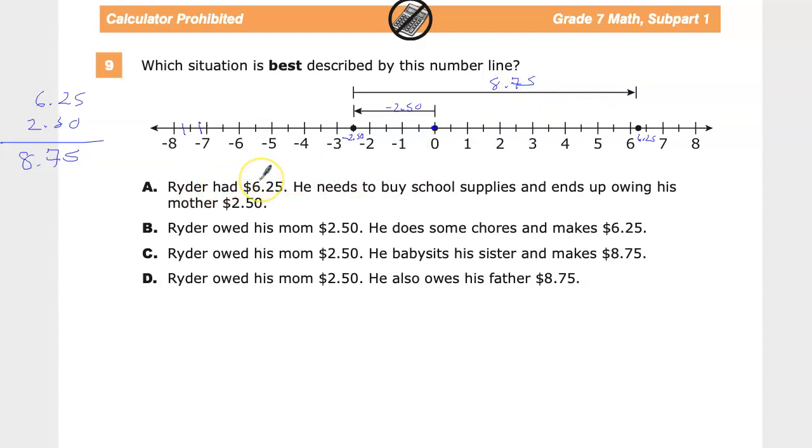So Ryder has $6 and 25 cents. What based on what? The starting point is probably here at nothing. So I'm going to guess that this is probably not it. He needs to buy school supplies and ends up owing his mother $2.50. Probably not because it goes down here and then goes all the way back up. It doesn't show that it's going down to 2.50. Now, if it had been here and it had gone all the way down in one fell swoop, then yeah, this represents two different actions. So A, I think is not going to be one of the answers that I will choose.